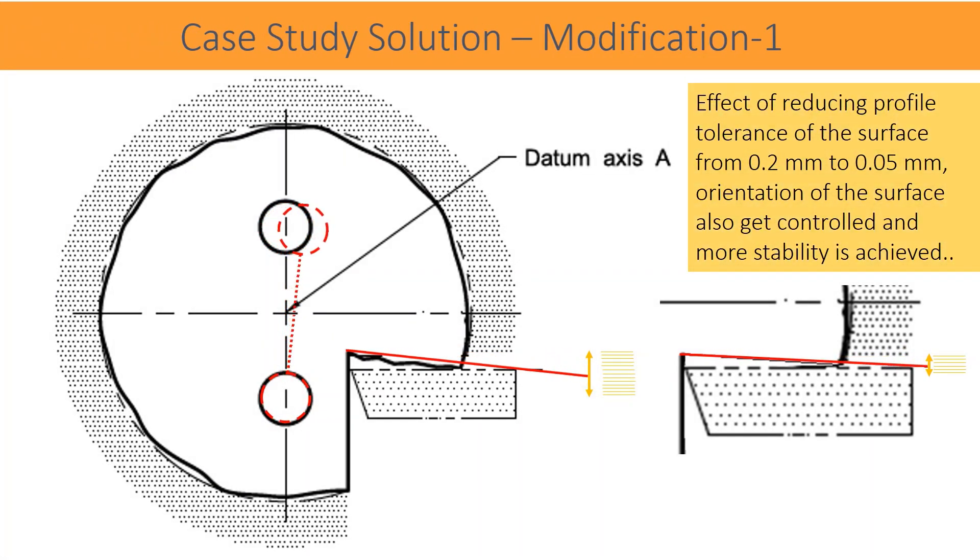Effect of reducing profile tolerance of the surface from 0.2 mm to 0.05 mm: orientation of the surface also gets controlled and more stability is achieved.